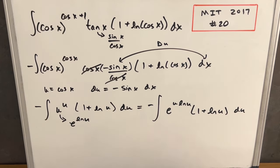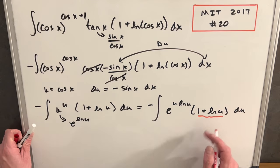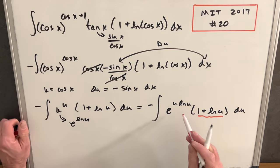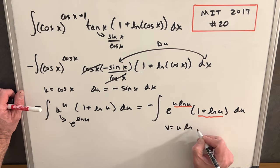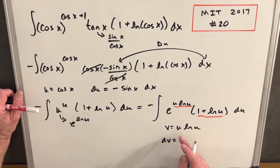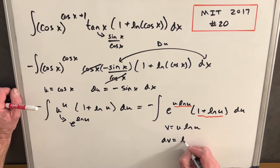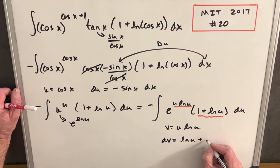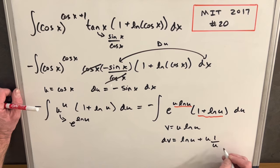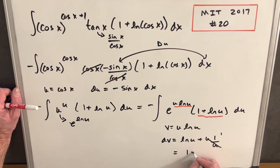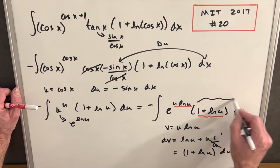Now we can do another substitution. This is a tricky derivative in disguise, but it works out nicely. Let v equal u ln u, and take the derivative dv. Using the product rule: derivative of u is 1, giving us ln u, plus u times the derivative of ln u which is 1 over u — those cancel to give 1. So dv equals 1 plus ln u du, and that's exactly what we have right here.